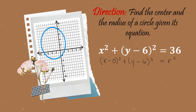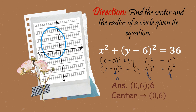We may convert 36 into exponential form to make it easier. So we have (x minus 0) squared plus (y minus 6) squared equals 6 squared, since 6 squared equals 36. With this, h is 0, k is 6, and the base gives us the length of the radius. So center is (0, 6) and radius is 6.